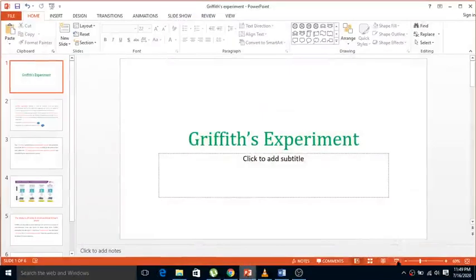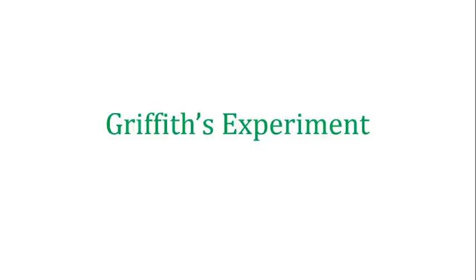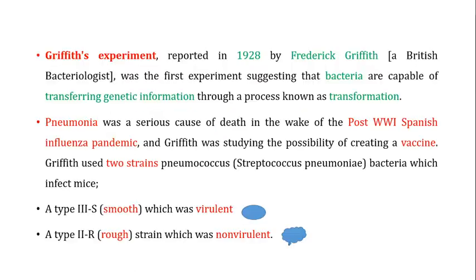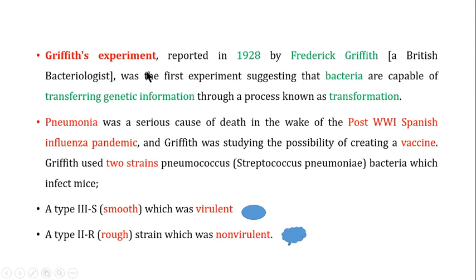Welcome back to this next video. In this video we are going to talk about the Griffith experiment, reported in 1928 by British bacteriologist Frederick Griffith. It was the first experiment suggesting that bacteria are capable of transferring genetic information through a process known as transformation.